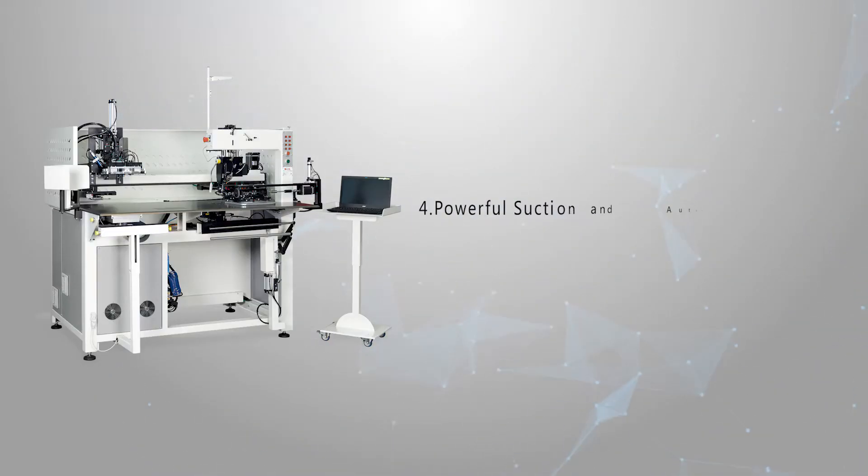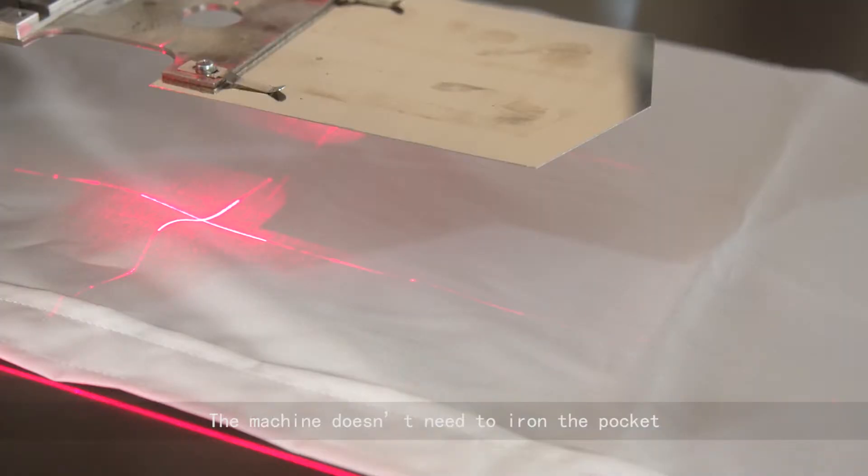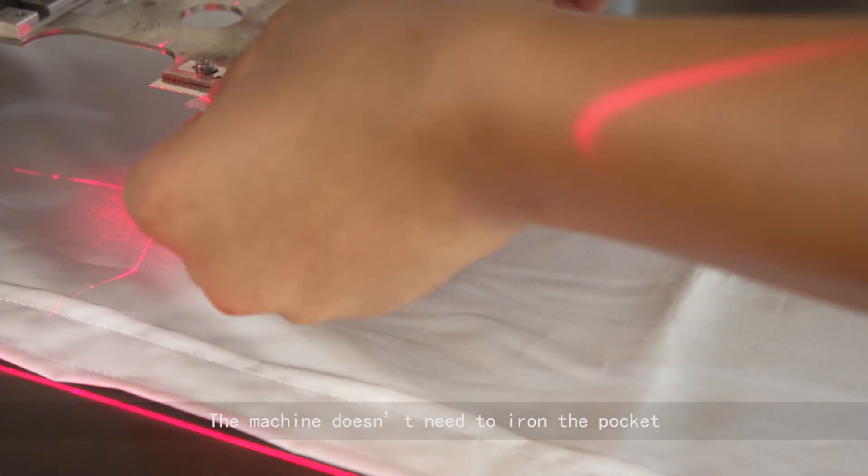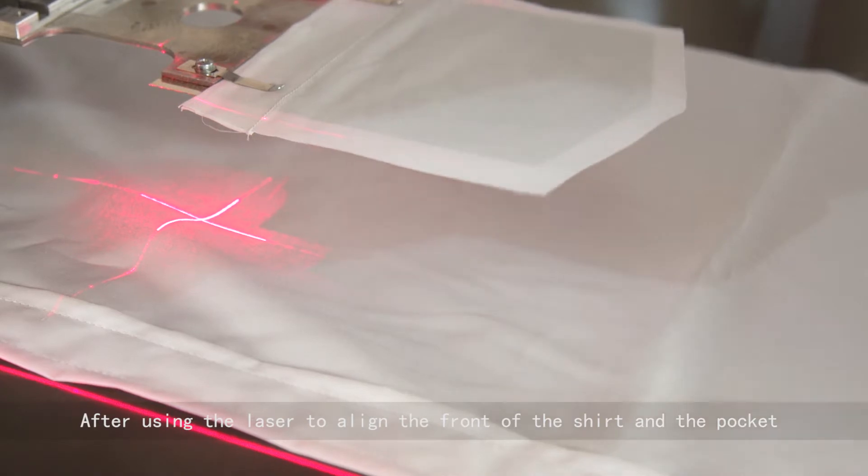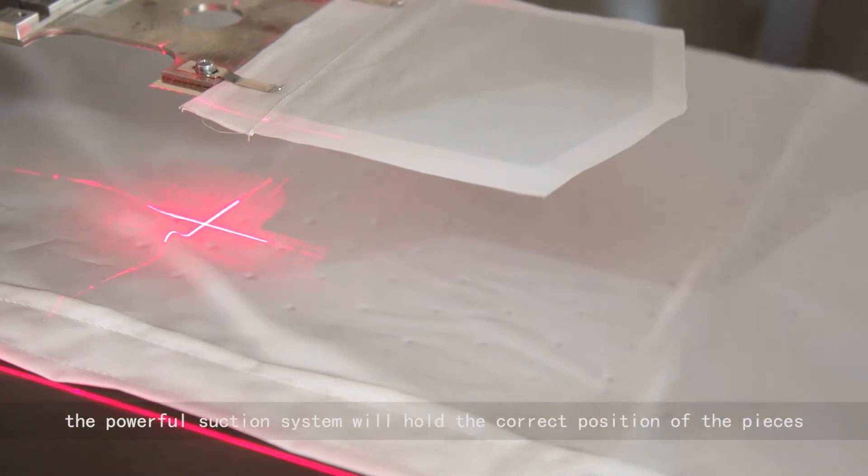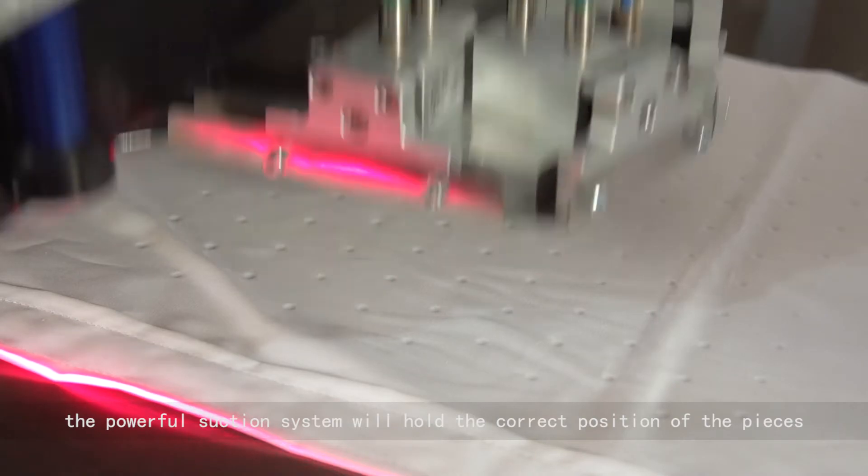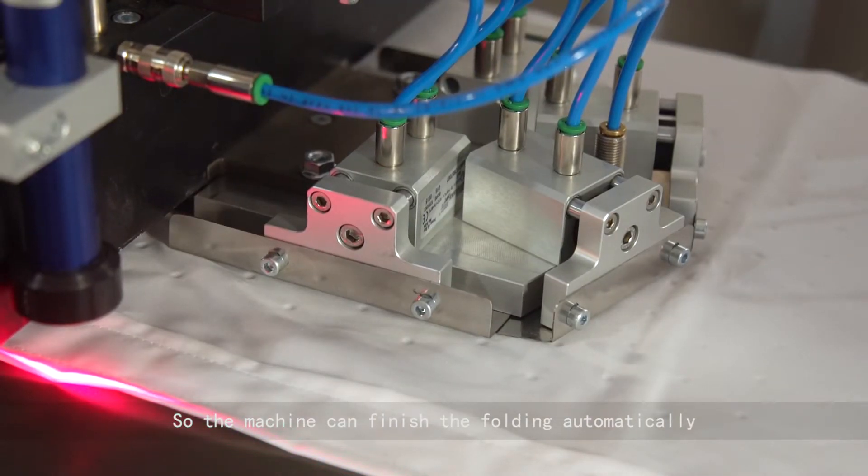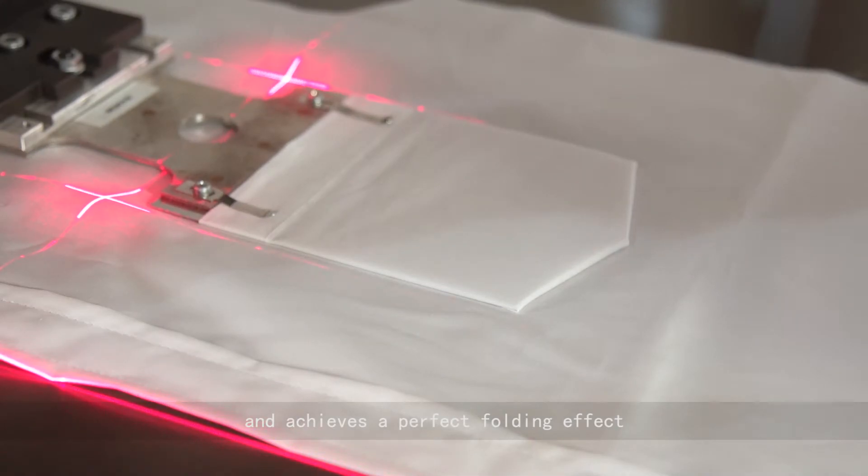Powerful suction and automatic folding device. The machine doesn't need to iron the pocket. After using the laser to align the front of the shirt and the pocket, the powerful suction system will hold the correct position of the pieces, so the machine can finish the folding automatically and achieves a perfect folding effect.